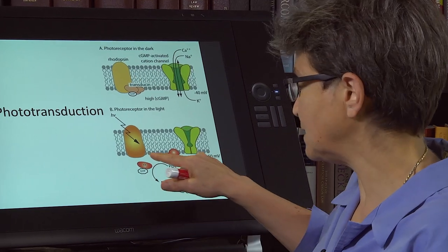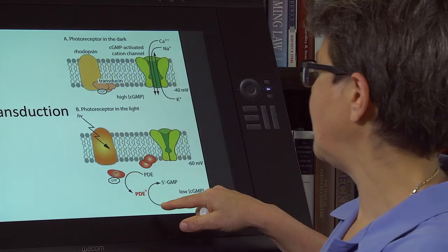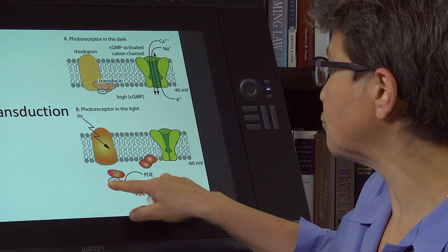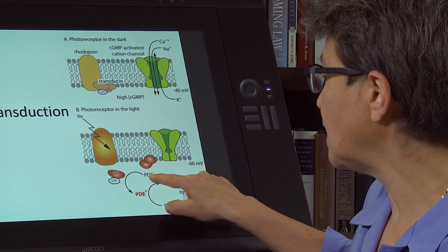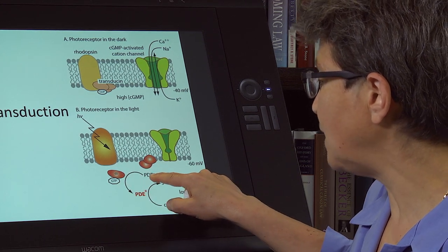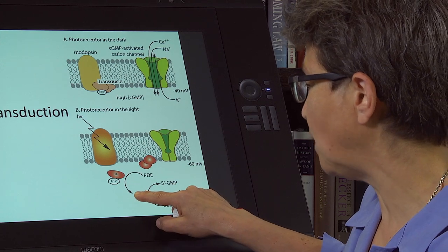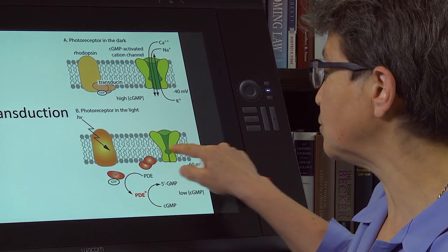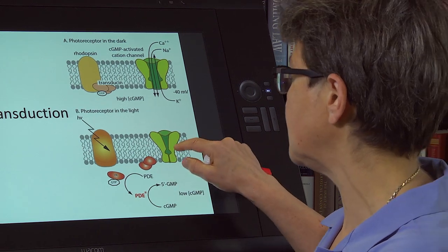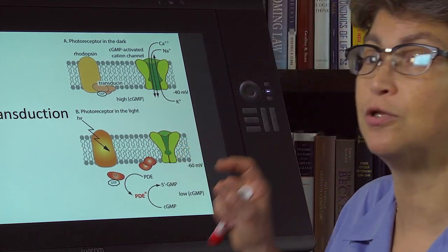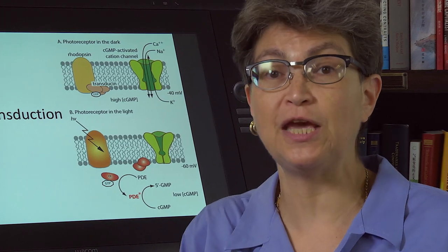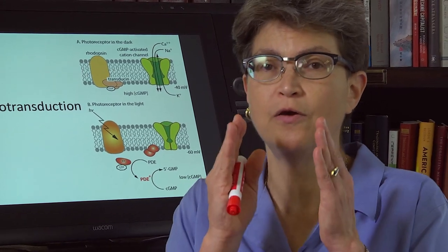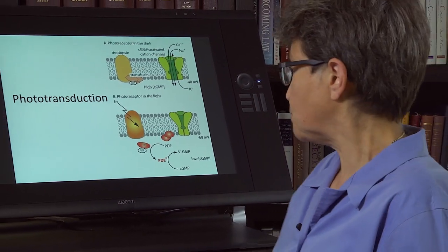One photon can excite the rod rhodopsin, and that has the effect of activating hundreds of these G proteins that can activate hundreds of these phosphodiesterase molecules, and then in turn lead to many hundreds of these cation channels closing. So there's an amplification from just one photon, so the response is big.